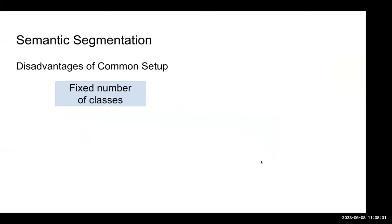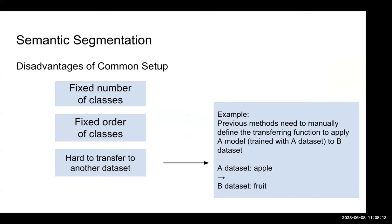In summary, previous models have several disadvantages: they are limited to a fixed number of classes and fixed order of classes, and it is very hard to transfer to another dataset. For example, if we have a model trained on dataset A with label 'apple' and want to transfer to dataset B which only has 'fruit', we have to manually assign a transfer function mapping apple's probability to fruit — which is super expensive. Therefore, previous methods are limited to existing object setups or labels.